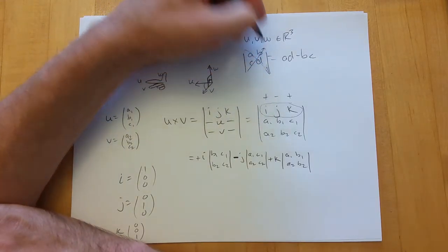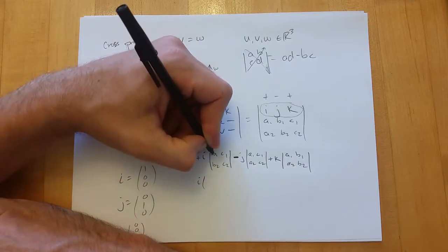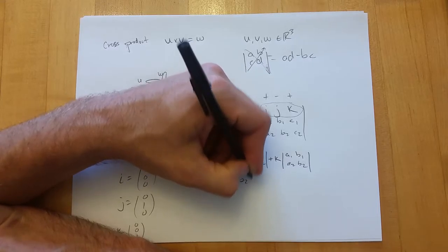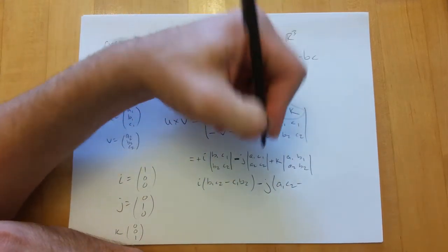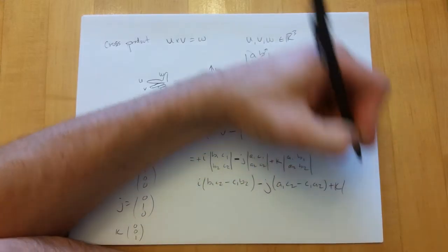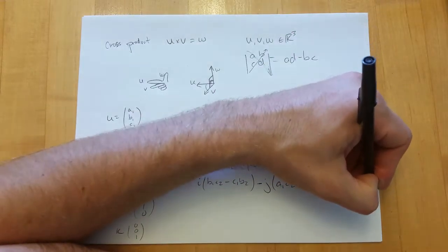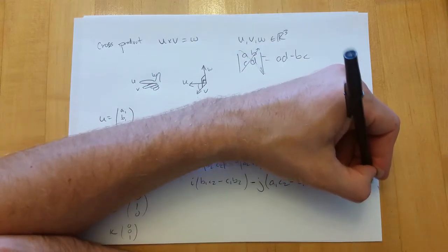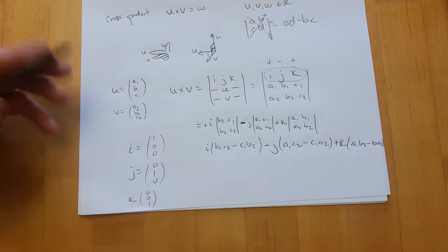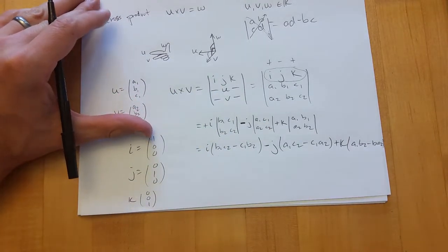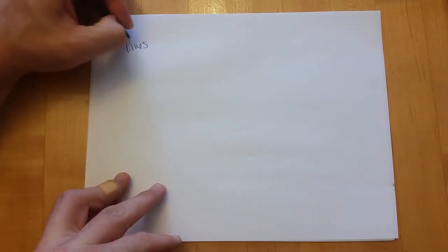Because it goes plus, minus, plus — the alternating signs — the j term is minus j. For the k submatrix, block off the k column to get a1, b1, a2, b2. The 2x2 determinant is ad minus bc, going down-right positive and up-right negative.